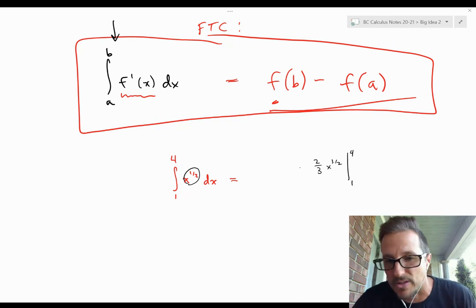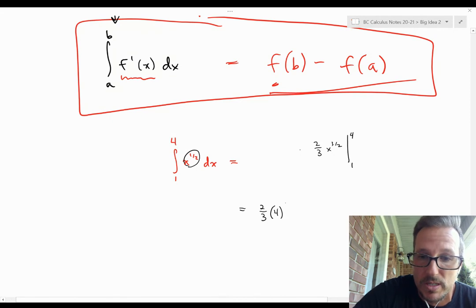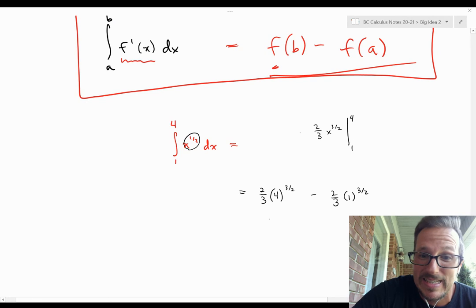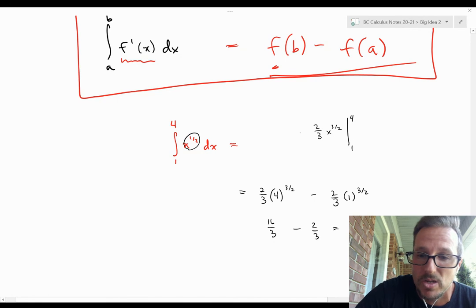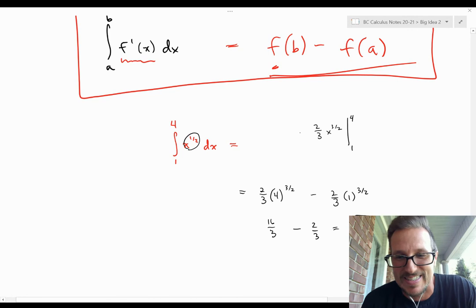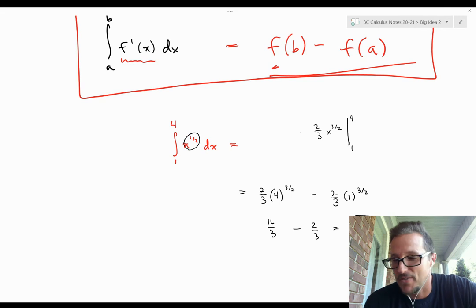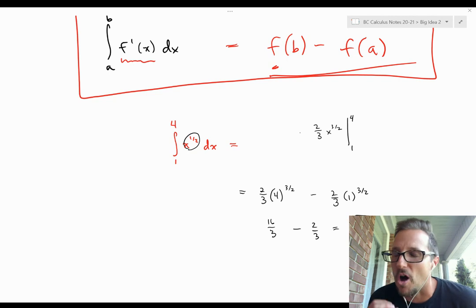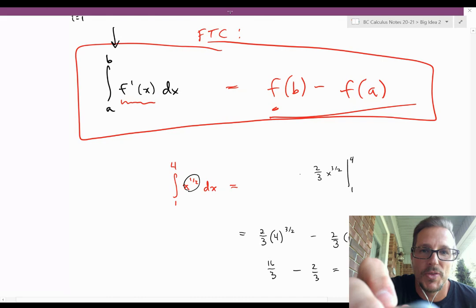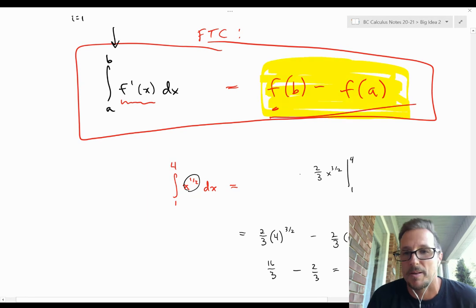Substituting in: two-thirds times four to the three-halves, minus two-thirds times one to the three-halves. Four to the three-halves is eight, so the first term is 16 thirds. One to the three-halves is one, so the second term is two-thirds. The result is 14 thirds — four and two-thirds, or 4.6̄ — the exact, not too big, not too small, exact area under that curve. We now have a method to calculate exact values of definite integrals: find an antiderivative, substitute the top limit, substitute the bottom limit, and find the difference.